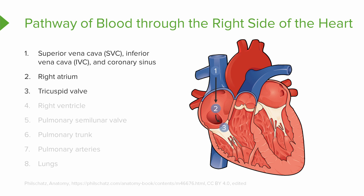From the right atrium, we go through the first atrioventricular valve. This is the tricuspid valve. From the tricuspid valve, blood is now going to flow into the right ventricle.